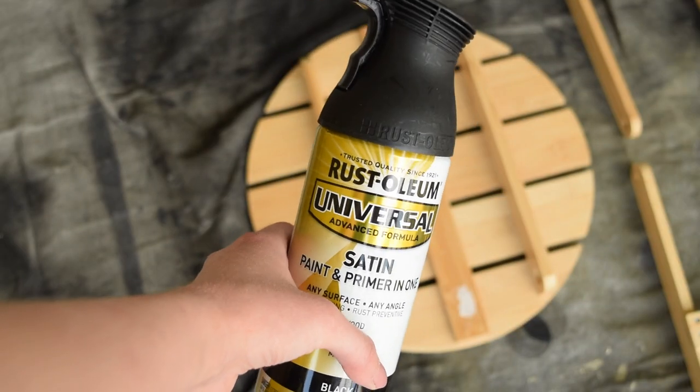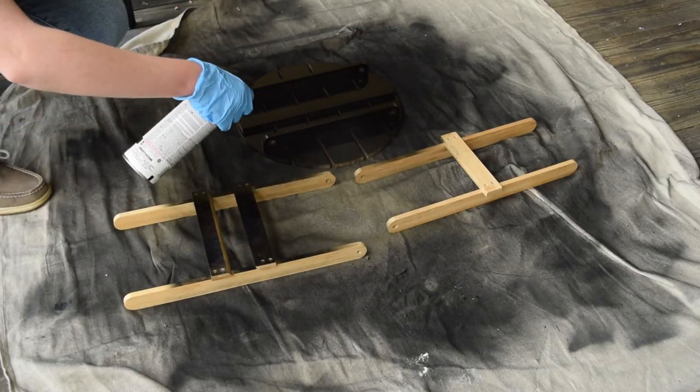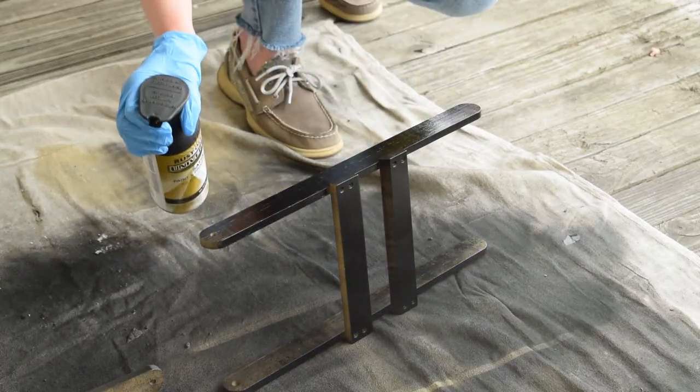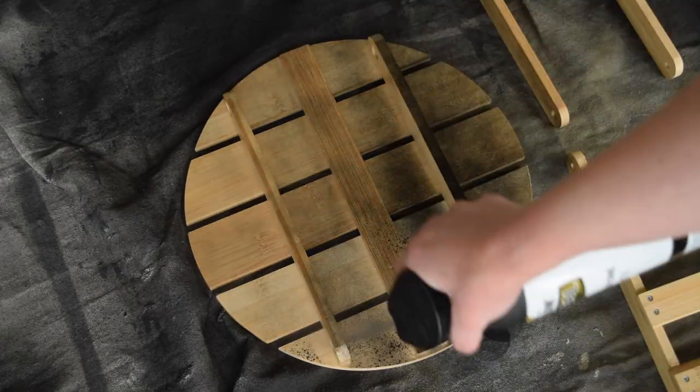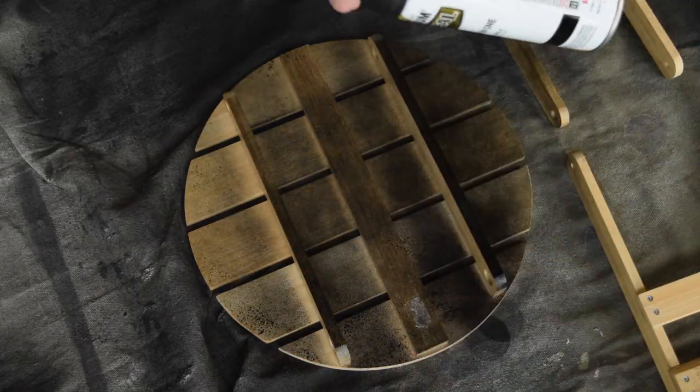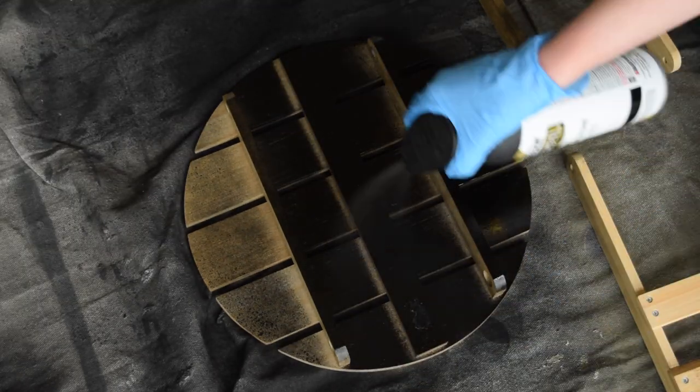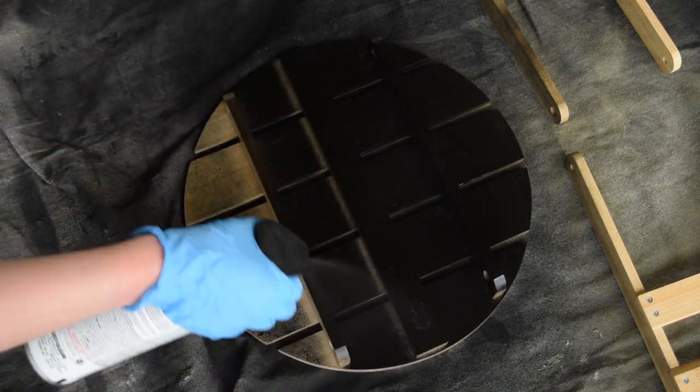I'm starting with this Rust-Oleum Satin Black spray paint and with the legs I made sure to cover them as completely as I could. I rotated them, I got every little nook and cranny of the legs because you'll really be seeing those. But then for the top of this plant stand, I only spray painted the bottom. I didn't bother flipping it over because that's going to be covered up and I just made sure that the bottom looked really nice.